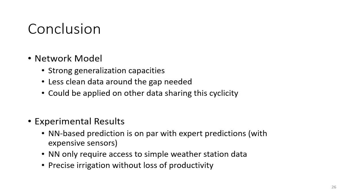If we now look at the experiments, we show that our neural network-based prediction is on par with what an expert can do with expensive sensors. And what is even more interesting is that our network only requires access to very simple weather station data to achieve the same performance as the expert in terms of irrigation and without loss of productivity.